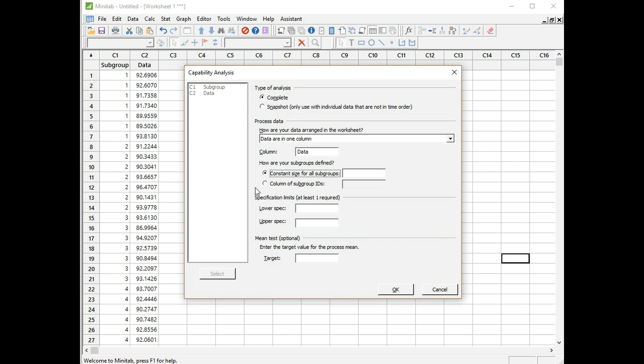Now I've got two ways of telling it what the subgroup size is because it's constant. I can either put in seven or I can put in the identifiers in the column. So I'll do the second method and tell it where the identifiers are for the subgroups. Now I just need to enter my lower spec limit and upper spec limit, 87 and 97 respectively. And we want to see if the mean of the process is at the target of 92, which is between the spec limits. Click OK to produce the reports.